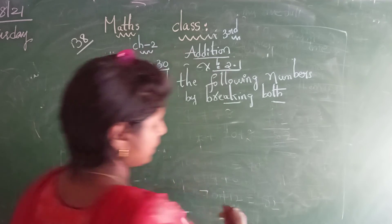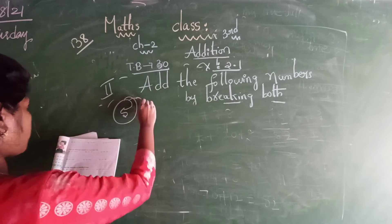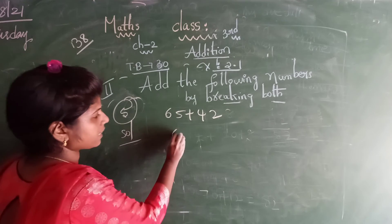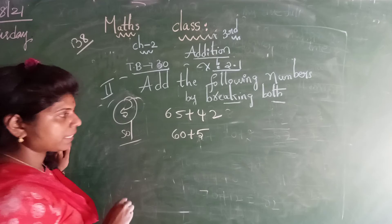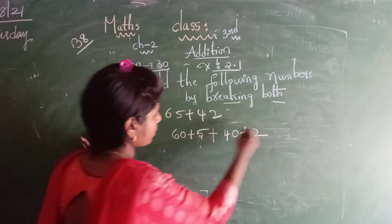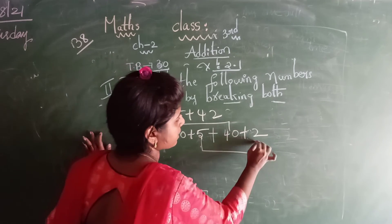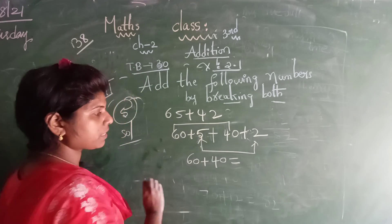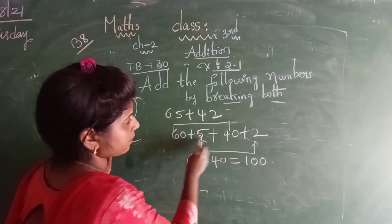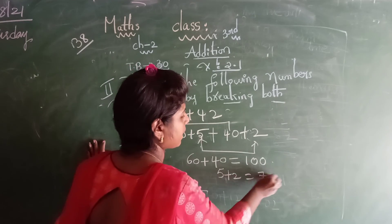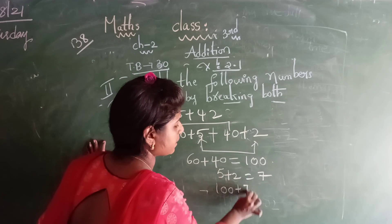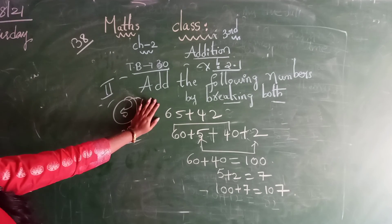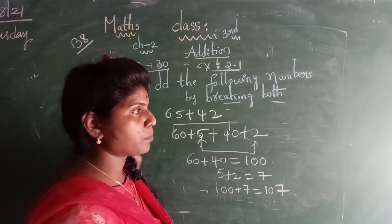Last problem in this bit. 65 plus 42. Split: 65 is 60 plus 5, 42 is 40 plus 2. 1st digit, 3rd digit, 2nd digit, 4th digit. 60 plus 40 equals 100. 5 plus 2 equals 7. Overall the addition: 100 plus 7 is equal to 107. Okay. This is the 2nd bit — by breaking both 2-digit numbers.